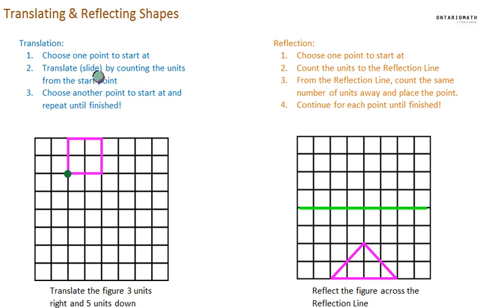I'm going to translate or slide by counting the units from the start point. So I have to translate it three units right and five units down. So let's count. Be careful you don't count this as one. You can't go one, two, three. You have to start here and count three right from it. So one, two, three units right and now five units down. One, two, three, four, five. So let's do it again. One, two, three, and now five down. One, two, three, four, five. And now I'm going to place my point there.